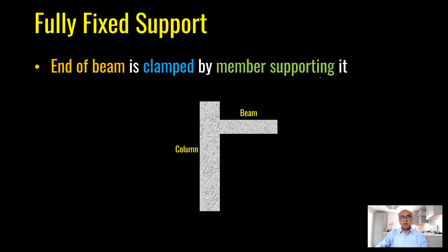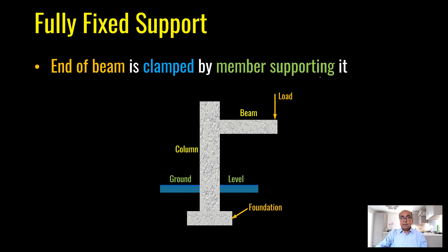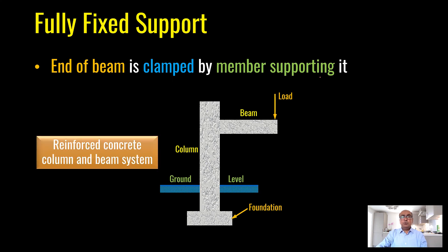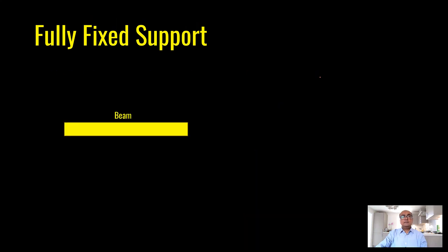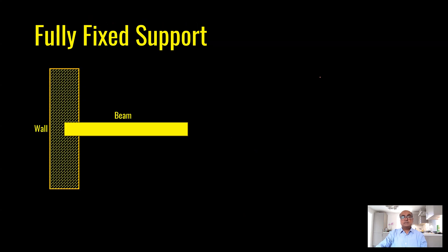In a reinforced concrete column and beam system, the joint between the beam and column is a rigid joint, and the joint at the bottom is a rigid or fixed support — the column is connected rigidly with the foundation. Another example of fully fixed support: a beam resting on a masonry wall and built into it, where the wall provides a rigid support to the beam.